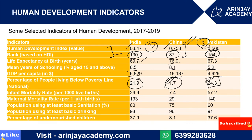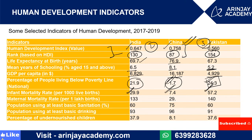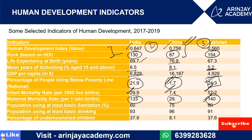If we talk about the infant mortality rate, in India it is 29.9, in China it is 7.4, and in Pakistan it is 57.2. The infant mortality rate of China is the lowest and Pakistan's is the highest. For maternal mortality rate, it is 133 in India, 29 in China, and 140 in Pakistan — Pakistan has the highest rate.